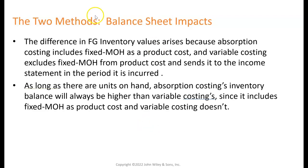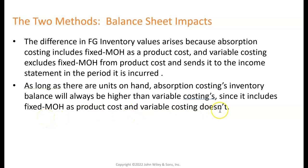The difference in inventory arises because absorption costing includes fixed MOH as a product cost, and variable costing excludes it and sends it to the income statement in the period it was incurred — the whole thing is expensed as a period cost. As long as there are units on hand, absorption costing's inventory balance will always be higher than variable costing's, because it includes fixed MOH as a product cost.